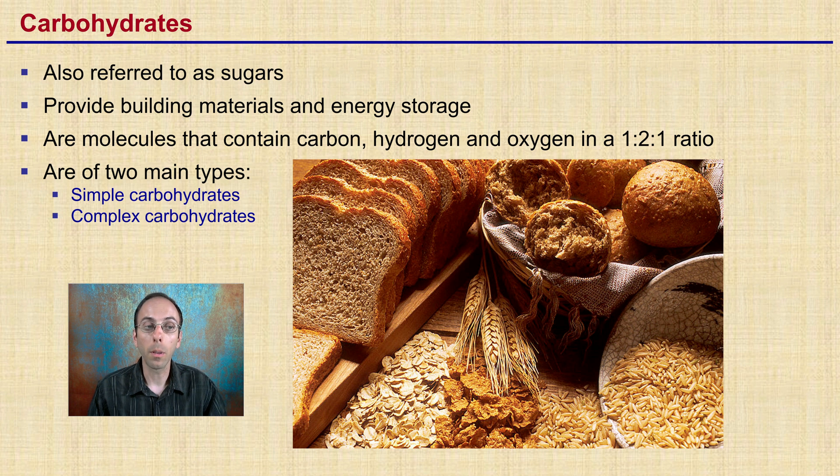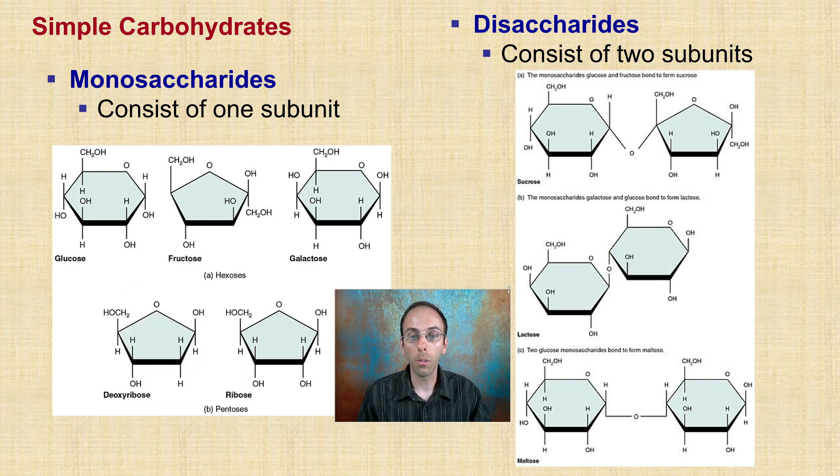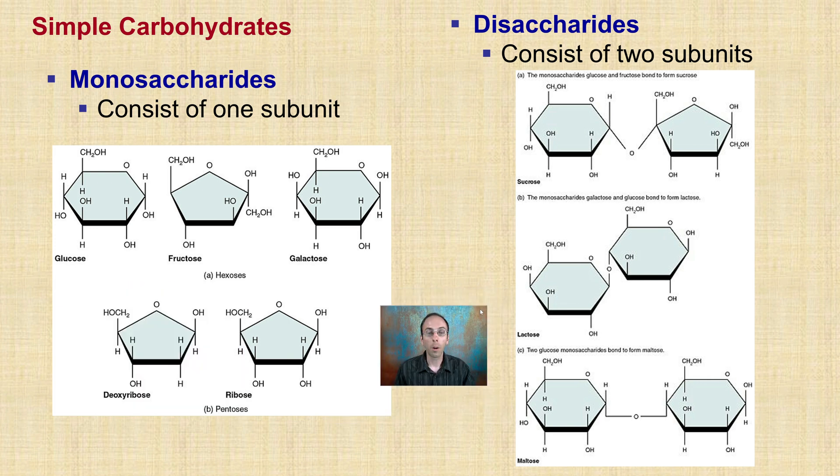There's two main types. There's simple and there's complex, and we're looking here at some more complex ones in the image with the bread and the pasta. Now looking at comparing the simple and what defines a simple carbohydrate, well, simple carbohydrates are called monosaccharides and disaccharides.